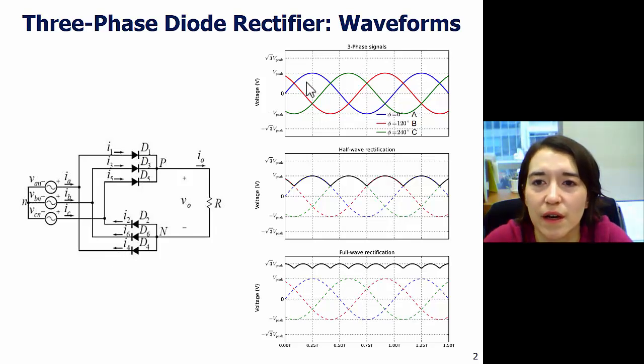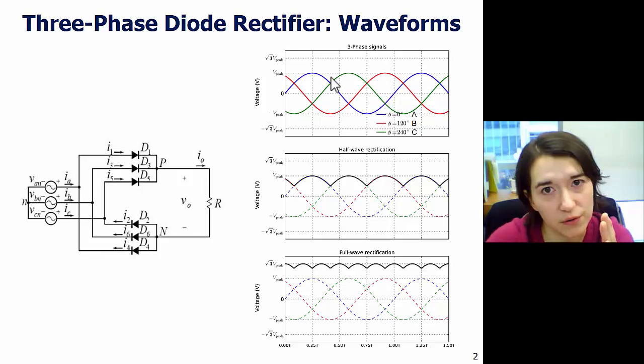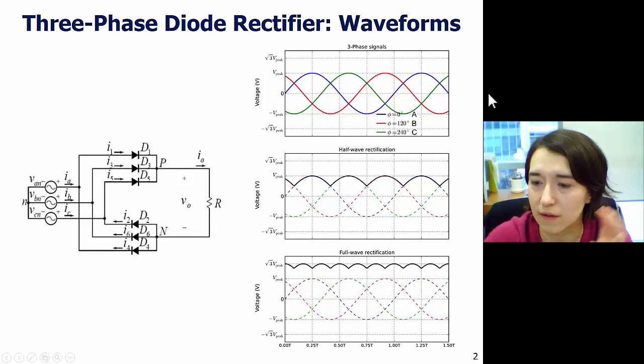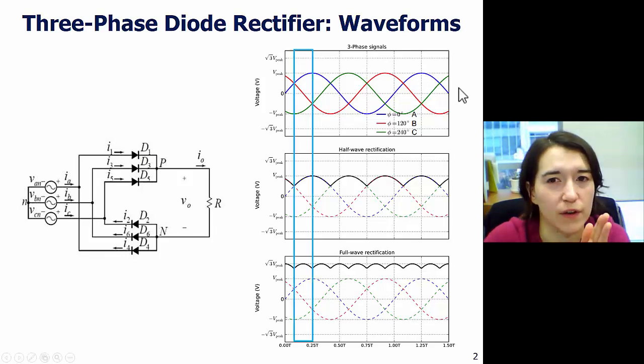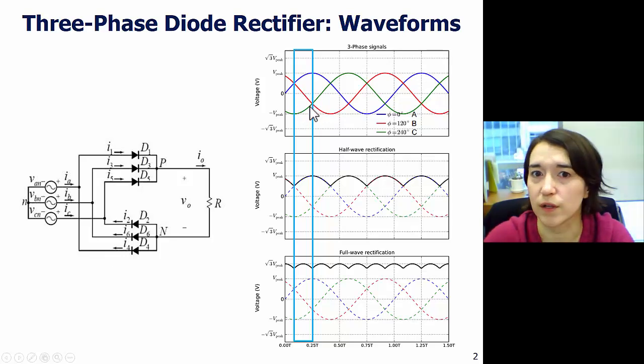You can see the blue is the A phase, and then B is the red one, and then C is the green one here. So, what we're going to do first is look at just this phase. We're going to narrow in on this area where blue A is the highest voltage, B is at a middle voltage, and then C is the most negative voltage.